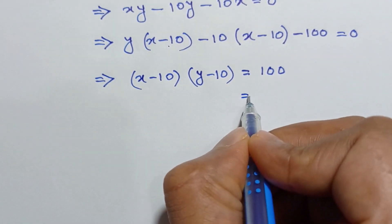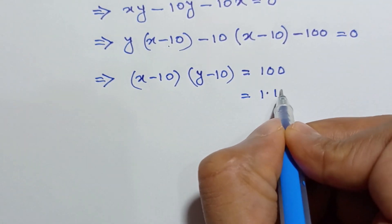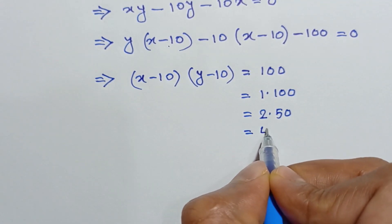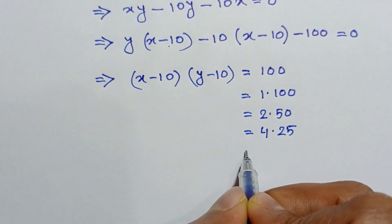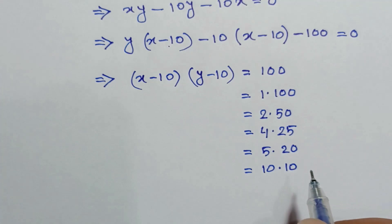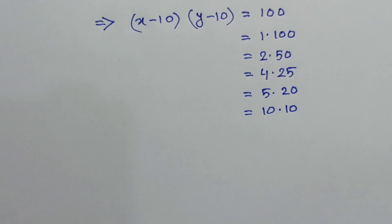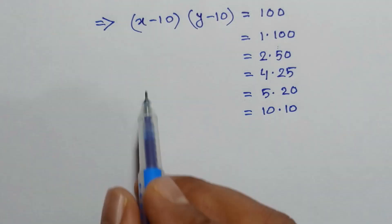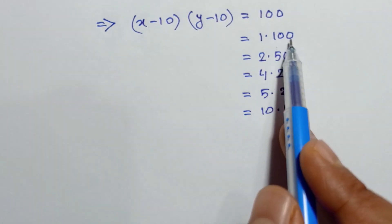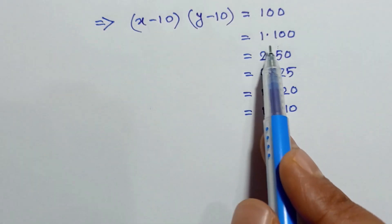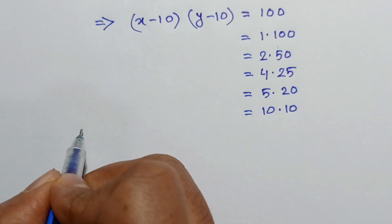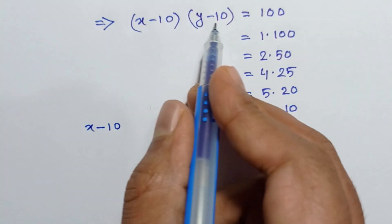Now 100 can be written as factor pairs: 1×100, 2×50, 4×25, 5×20, and 10×10. Comparing left and right sides, we set (x minus 10) equal to one factor and (y minus 10) equal to the corresponding factor.